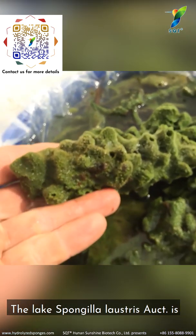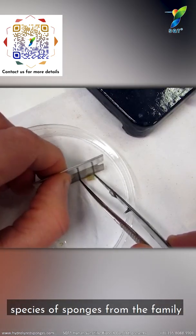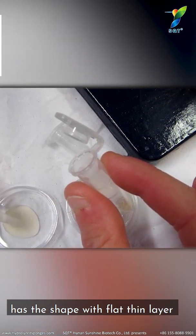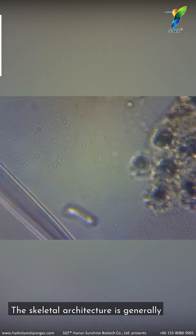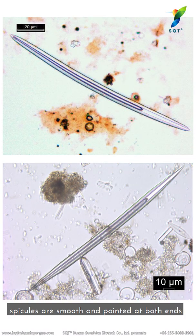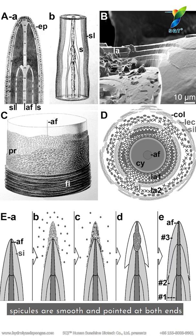The Lake Spongilla Lacustris is a species of sponge from the family Spongillidae, with a flat, thin-layered shape and compact structure, clear radial fibers, and intact speckles. The skeletal architecture is generally cylindrical and spindle-shaped, with speckles that are smooth and pointed at both ends.